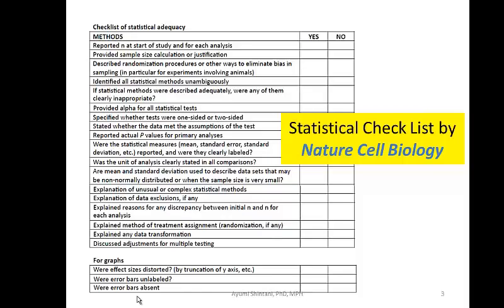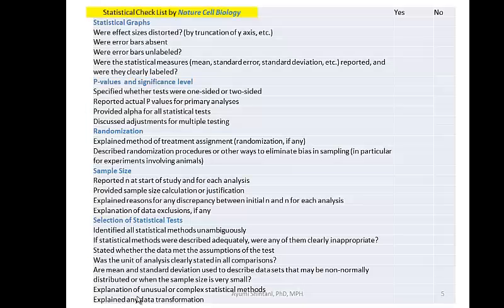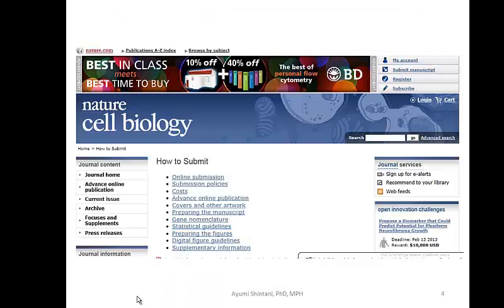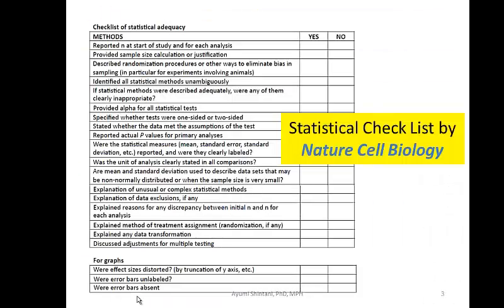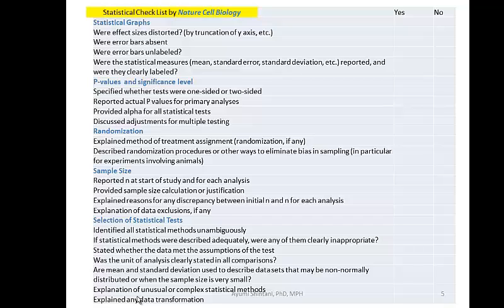If you want to download this checklist, you actually have a handout — a cleaner version I created. If you want to see the original version, you can go to their website, click on Statistical Guidelines, and download the list. The original list covered topics in a scattered order, so I sorted it by topic.